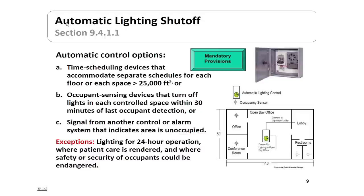There are requirements for shutoff. Automatic control options have to be in place — time scheduling devices that accommodate separate schedules for each floor or space greater than 25,000 square feet, or an occupant sensing device that turns off lights within 30 minutes of the last occupant detected. Another exception allows a signal from a control or alarm system indicating the area is unoccupied. Exceptions to shutoff controls include lighting for 24-hour operation, patient care areas, or where safety or security could be endangered.